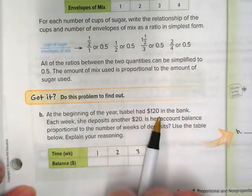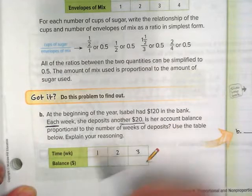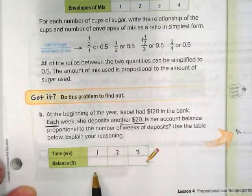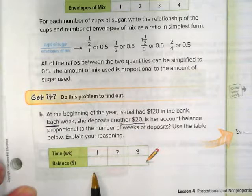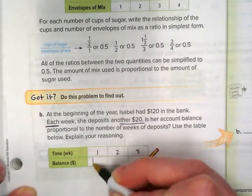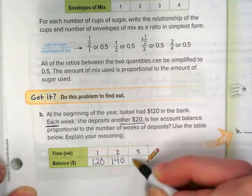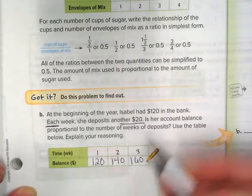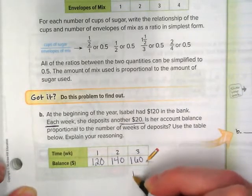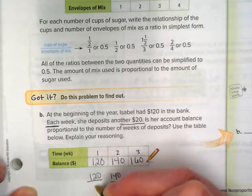At the beginning of the year Isabella had $120 in the bank. Each week she deposits another $20. Is her account balance proportional to the number of weeks of deposits? So week 1 she had $120, week 2 she added $20 more. Now remember whenever we have money and we're trying to do a ratio it really should be on top. So we're going to do 160 divided by 3, 140 divided by 2, and 120 divided by 1.